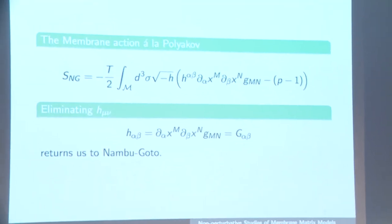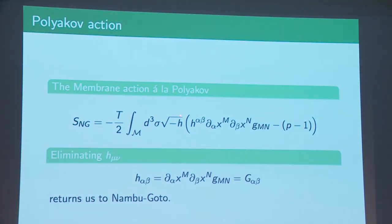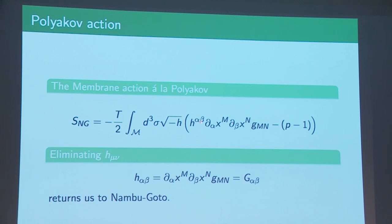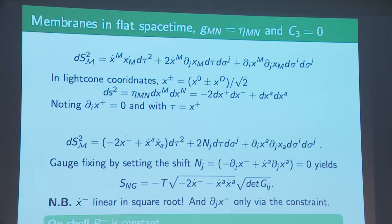One can discuss this in Palatini form but that doesn't seem to lead to any additional insights. If I put in a Lagrange multiplier metric h, one can integrate it back out — it looks more or less the same but hasn't led to any additional insight into how to quantize these models. What seems to be successful, and this was Jens's initial observation, was to go to the light-cone coordinates and the shield gauge in light-cone coordinates.